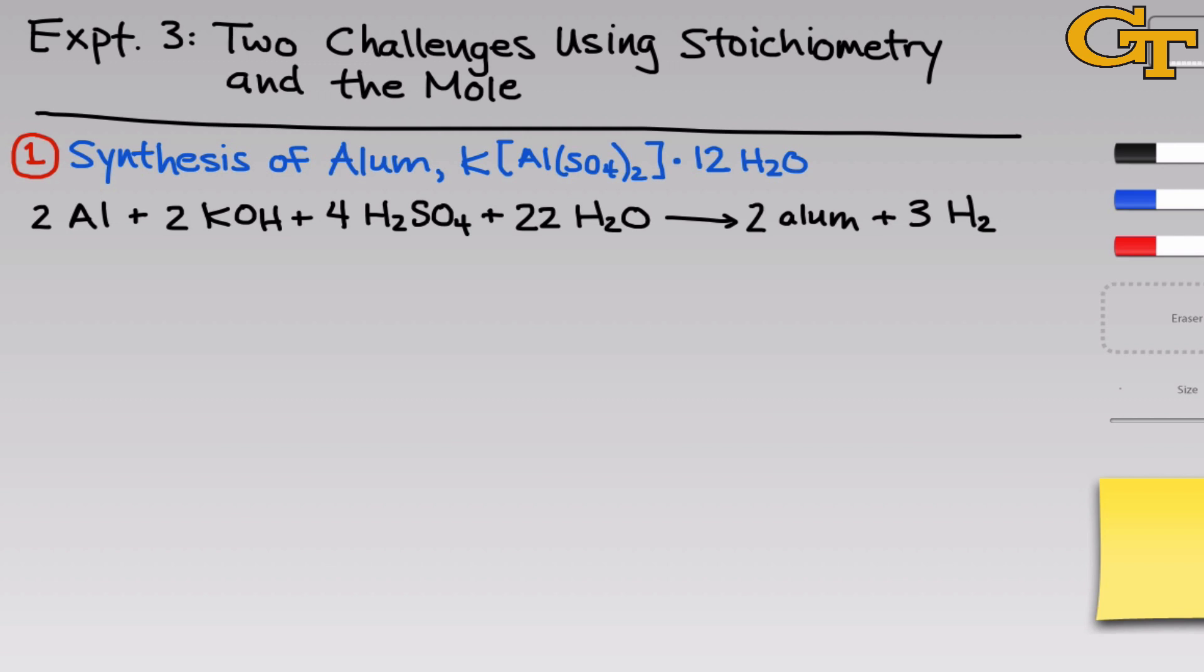So I wanted to begin by briefly talking about the reaction involved in alum synthesis, as well as a little bit about the stoichiometry calculations involved in planning to make sure that we get the desired amount of product. So the reaction involved is 2 moles of aluminum, which we'll get from aluminum cans, sand it off to remove paint and any other sealants on the surface, reacting with 2 moles of potassium hydroxide, 4 moles of sulfuric acid, and 22 moles of water to form 2 moles of alum and 3 moles of hydrogen gas. And the formula of alum, you can see near the top of this slide, is KAl(SO4)2·12H2O.